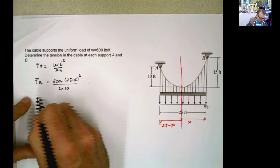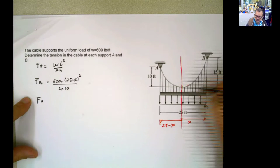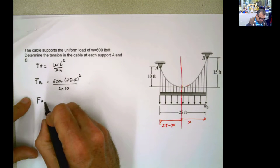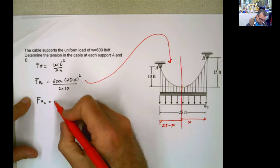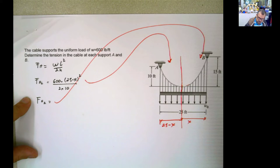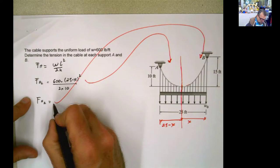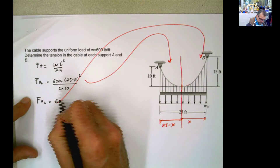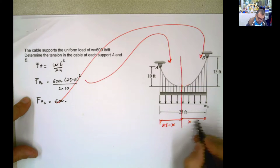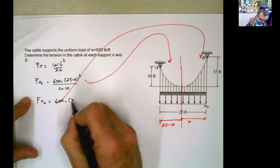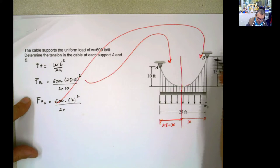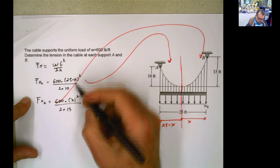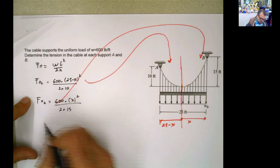And the horizontal force coming from the right side, or using the right diagram, we use this. And for this one, we're going to use that one over there. So it's going to be the load, 600, multiplied by l. In this case, it's x² divided by 2 times the sagging, which is 15. And I know this and this has to be equal. So then I'm going to make them equal.